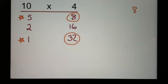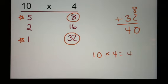I'm going to rewrite them over here. 8 and 32. I'm going to add those together. And I come up with 40. 10 times 4 equals 40.